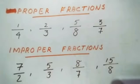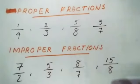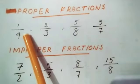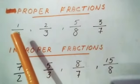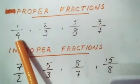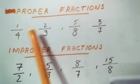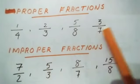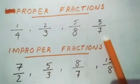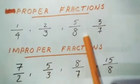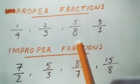The next type is proper fractions. In a proper fraction, the numerator is always less than the denominator — the bottom number is bigger and the top number is smaller. Examples: 1/4, 2/3, 5/8, 3/7. These are all proper fractions because the numerator is always less than the denominator.